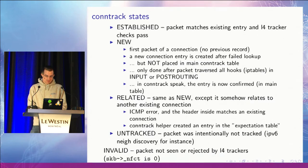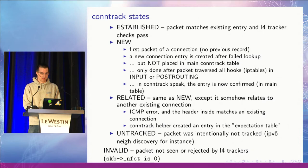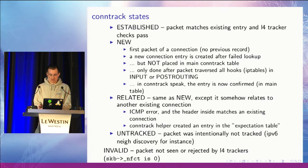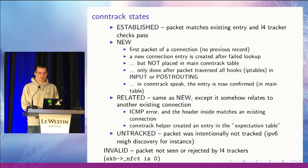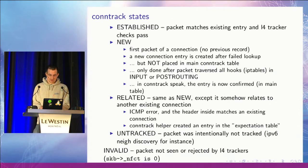Another state is 'related', which is basically exactly the same as new except that the packet or the new flow relates in some way to something we already have a record of. For example, if you receive an IPv6 'packet too big' message, we will actually extract the original header of the packet that generated the event, look that up, and if we see that we have a record of that flow then it will be related and not new.